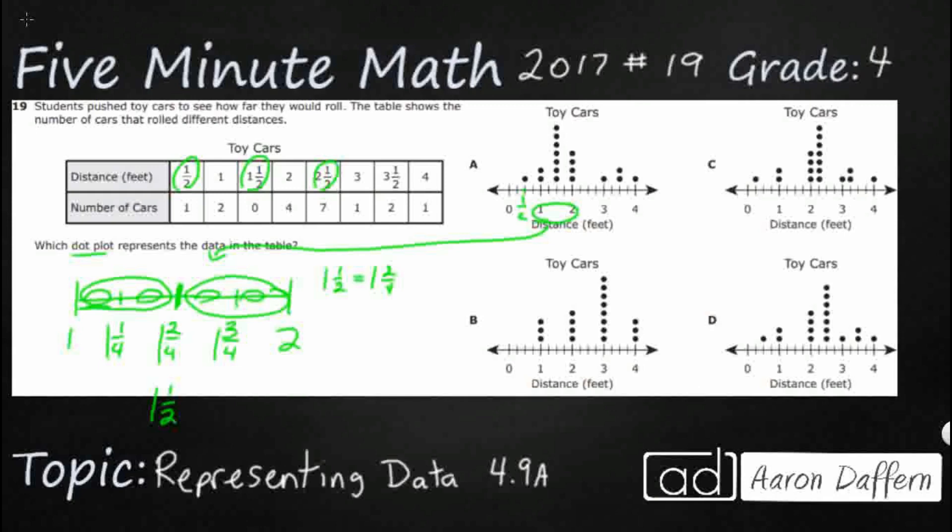And so let's just start with A. So A is supposed to have one on a half. That looks good. Supposed to have two on one and I've got one, two. So that's good right there. And it's supposed to have zero on one and a half. Well, here's my one and a half. And whoa,